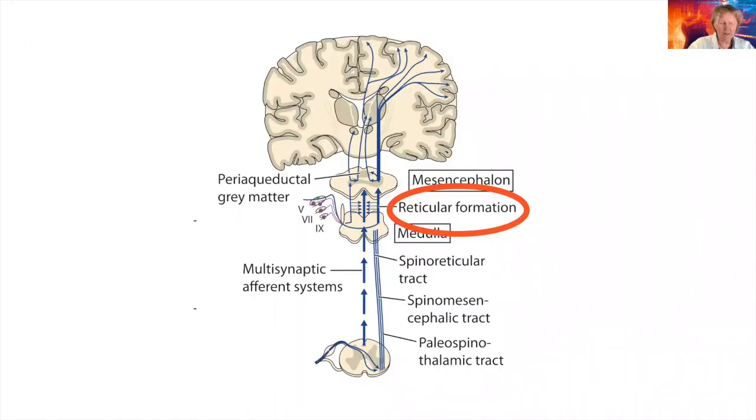Here it is. The formatio reticularis is a network of neurons and neural nuclei that originates from the brain stem via the diencephalon, especially from the thalamus located there, and radiates to all parts of the cerebral cortex.